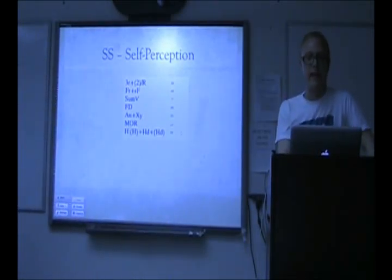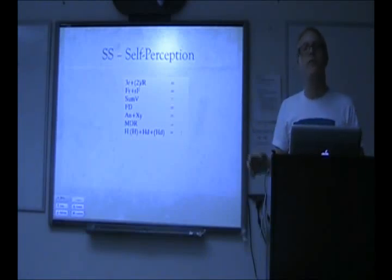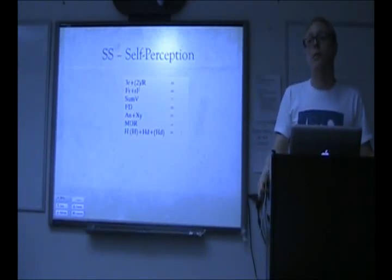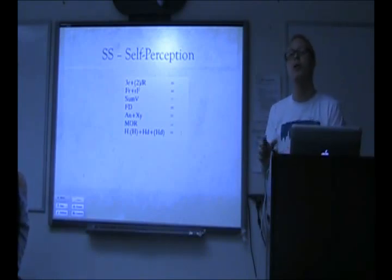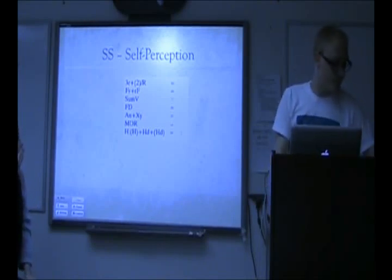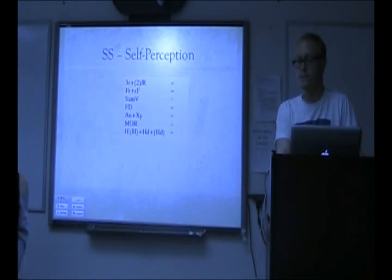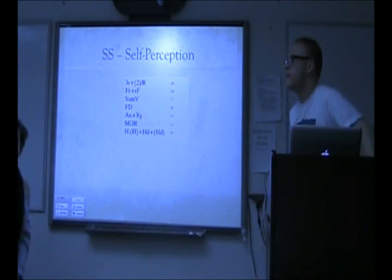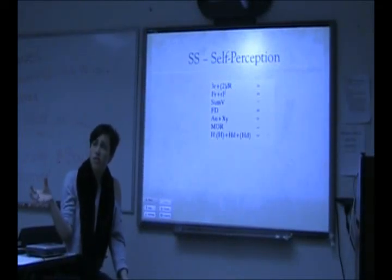The values we've been discussing are for healthy normal adults. If it's children, you want to look at the norms in the book — you probably don't have to know them for the exam. You have to know the norms for healthy adults. The key things to know for children: you expect one food score, and you expect a texture response with children but not with adults.